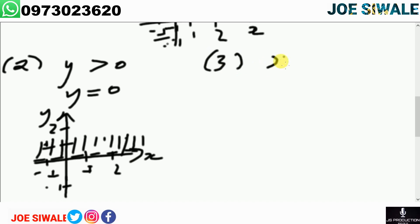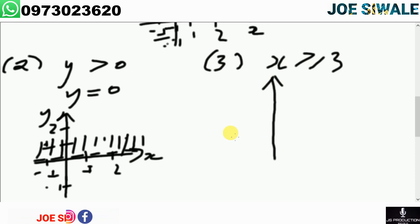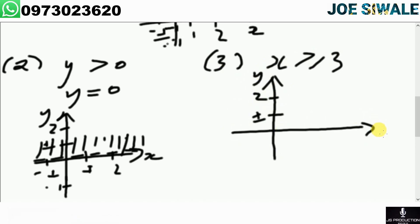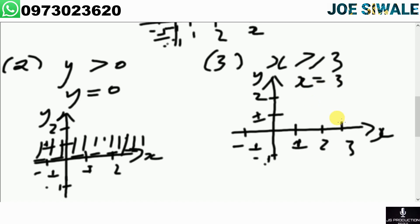The next example is x is greater than or equal to 3. I set up my axes and identify x equals 3. Since the sign is greater than or equal to, the line has to be a solid line. I draw a solid line at x equals 3, and since the sign is greater than or equal to, I shade on the right side.